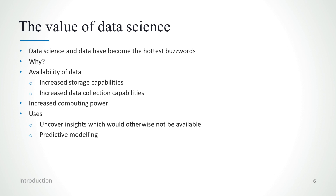For example, Bayesian statistics has increased rapidly in popularity due to the fact that now we can run Markov chain Monte Carlo on a simple laptop. This was unimaginable, for example, in the 80s. But the real reason data science was so successful is because of the value it can provide in a variety of contexts.